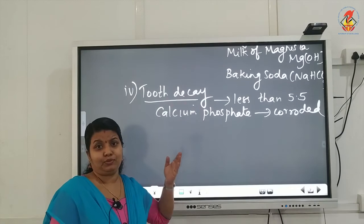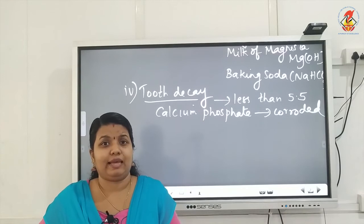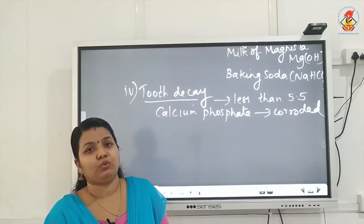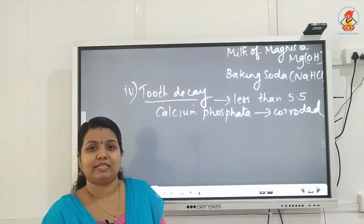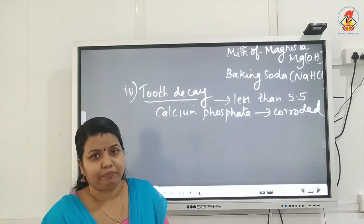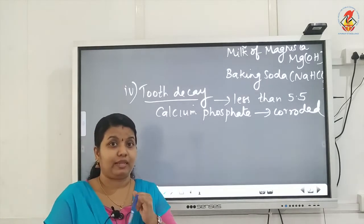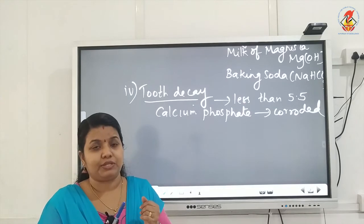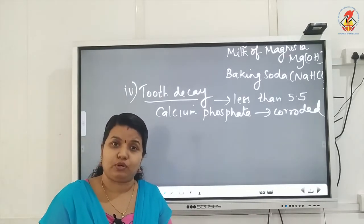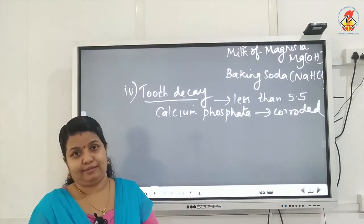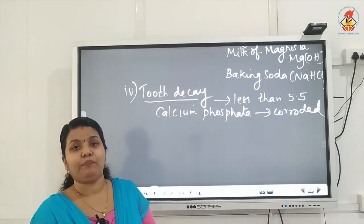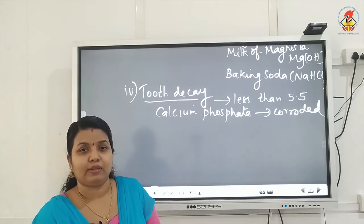How can we prevent tooth decay? Since it is due to leftover food items causing the pH to fall below 5.5, we should wash our mouth after every meal. We can also make use of a toothpaste that is basic in nature. These are the two ways in which tooth decay can be prevented — using a basic toothpaste and washing your mouth properly after each meal.